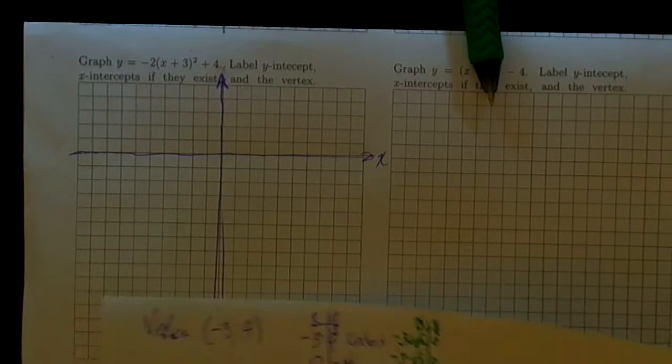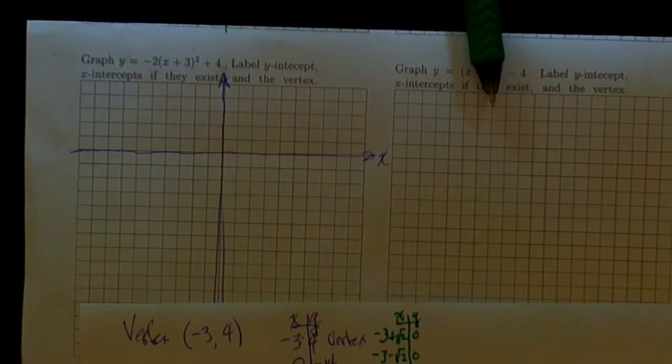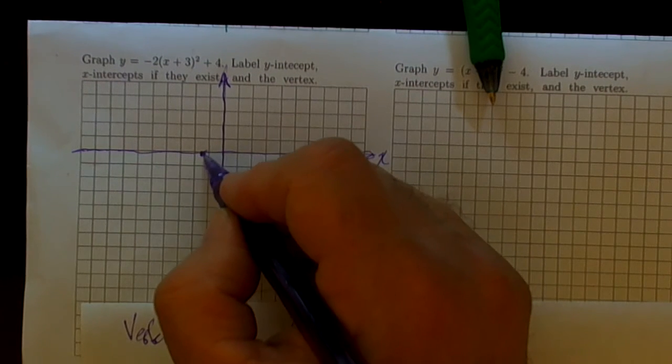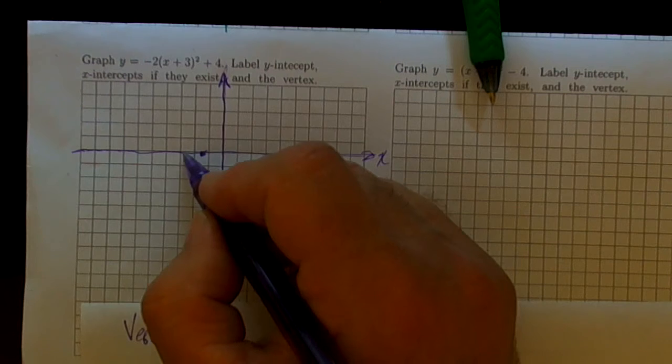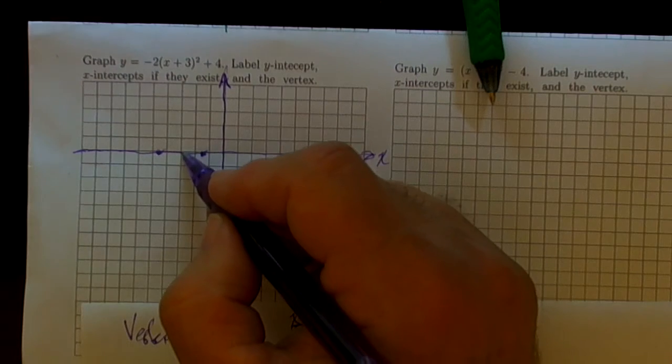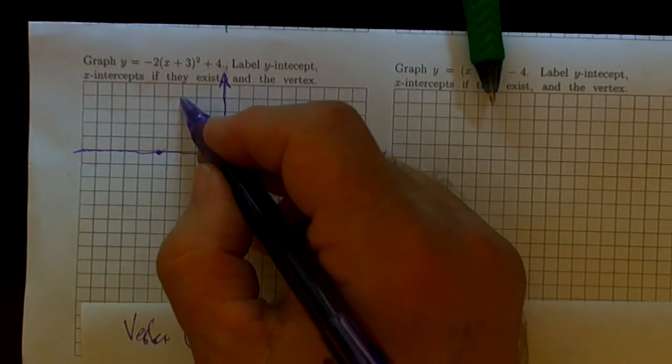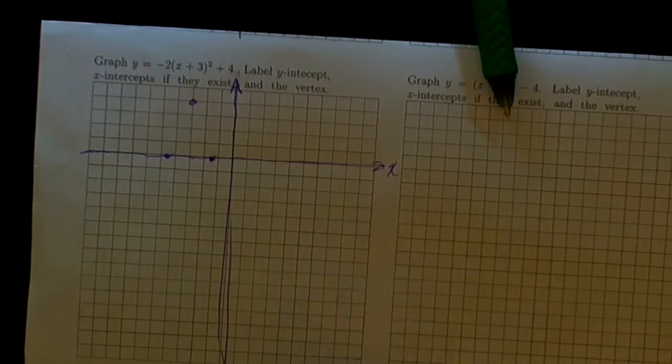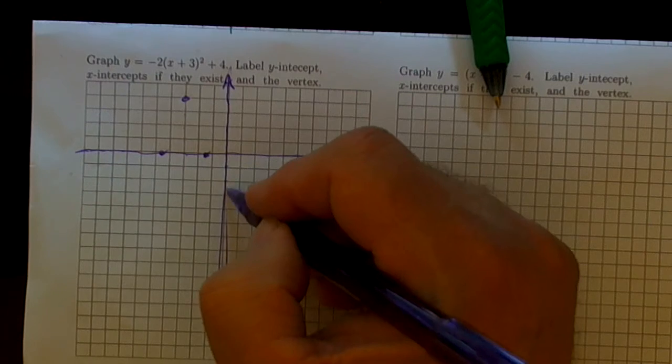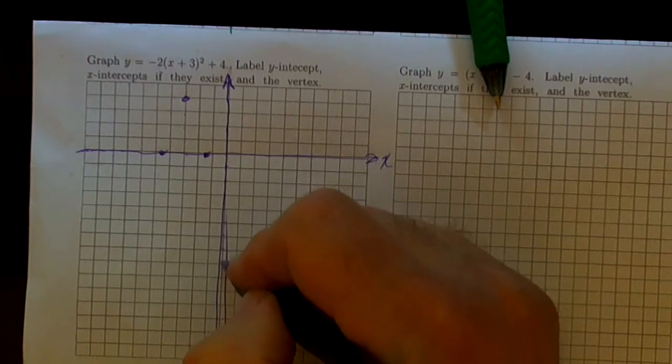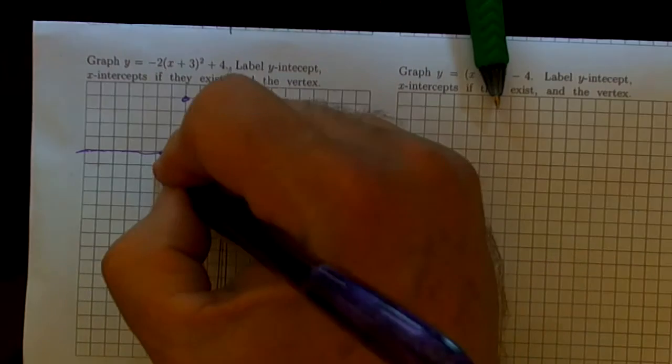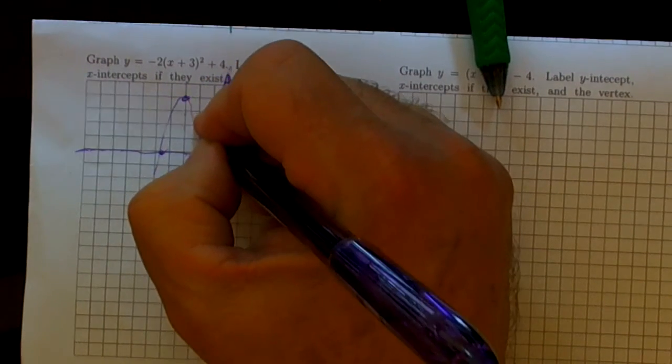The x-intercepts are at about minus 1 and a half, and minus 4 and a half somewhere around in there. And the vertex is at minus 3, up at 4. And down here at 0, minus 14. So there's where it's sitting, about right like that.